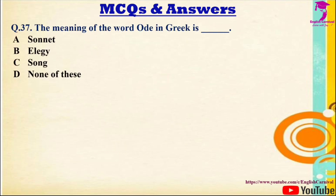Question 37: The meaning of the word 'Ode' in Greek is — Options: A) Sonnet, B) Elegy, C) Song, D) None of these. The correct answer is C — the meaning of the word 'Ode' in Greek is Song.